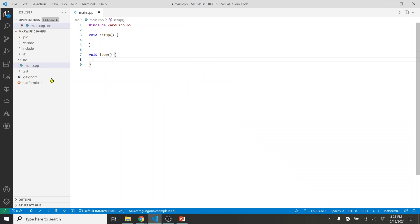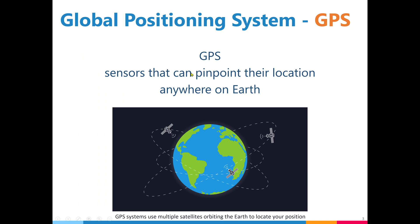Before moving on, I'd like to share some information about GPS. GPS stands for Global Positioning System — it uses satellite information, and at least three satellites are needed to find your location. You don't need an internet connection or anything like that.